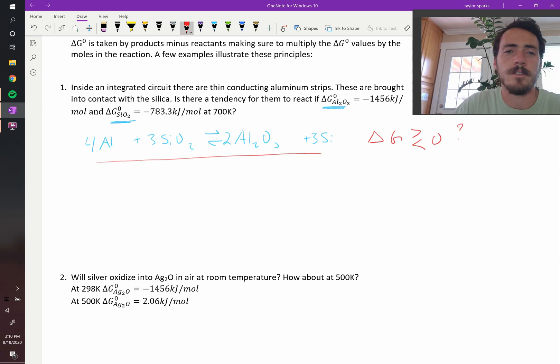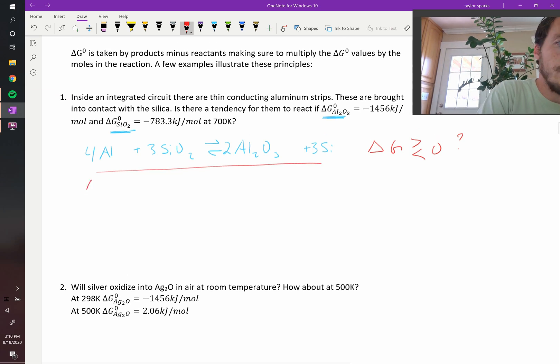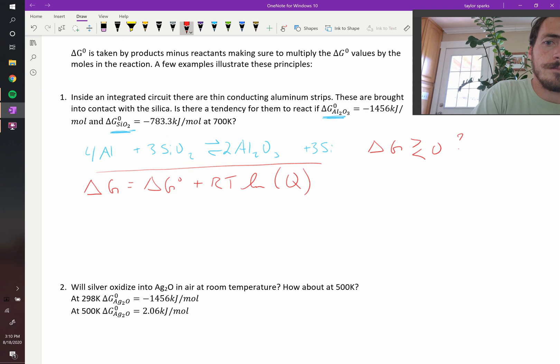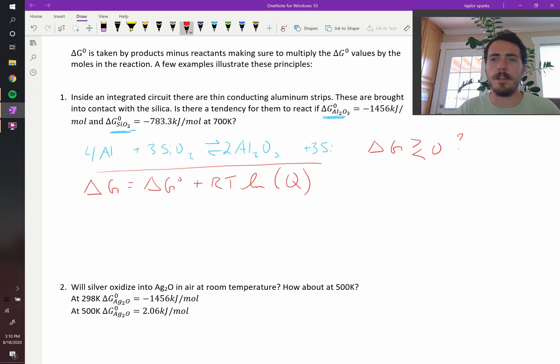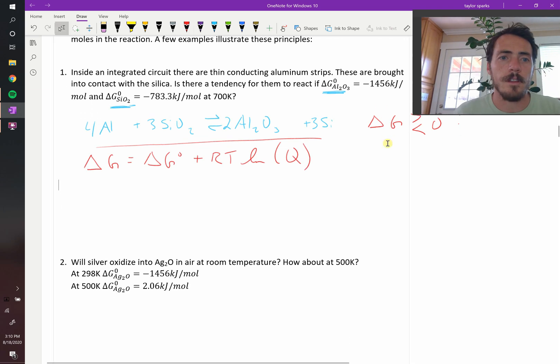Is delta G greater than or less than zero? That's the question. To solve that, we have the following. We know that delta G is equal to delta G naught plus RT natural log of Q. Now in this reaction, everything is a solid.